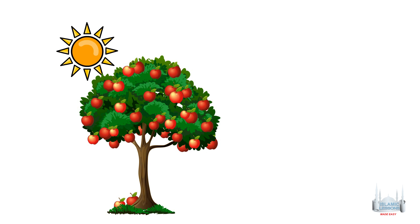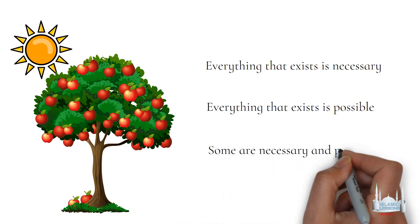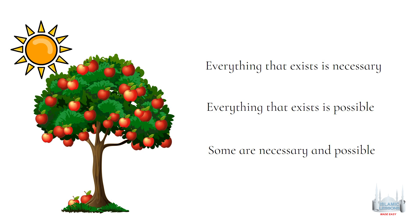Now when we look at the world, we see things exist — I exist, the sun exists, an apple exists, you exist, and so on. For everything in the world to exist, it could have only three possibilities: 1. Everything that exists is necessary, meaning everything that exists didn't require a cause to exist. 2. Everything that exists is possible, meaning everything that exists requires a cause to exist. 3. Some existents are necessary and some are possible, meaning some things require a cause and some things don't.